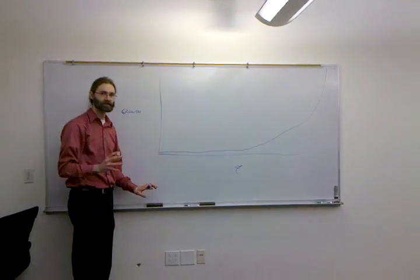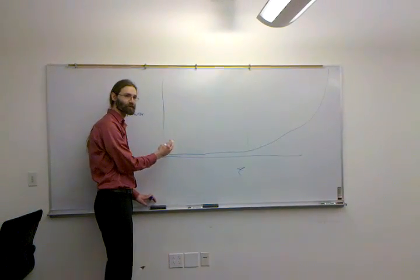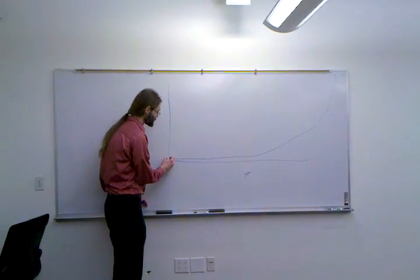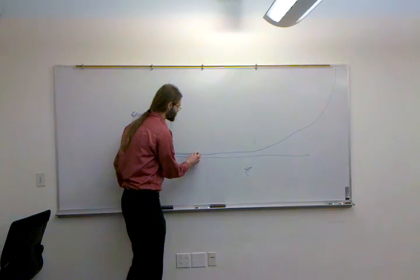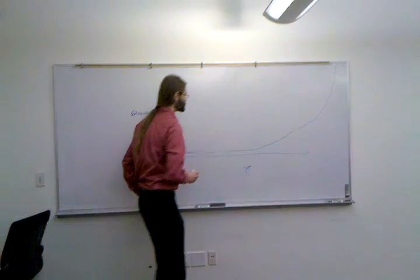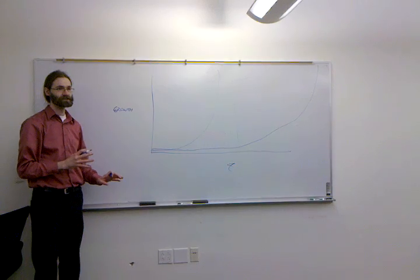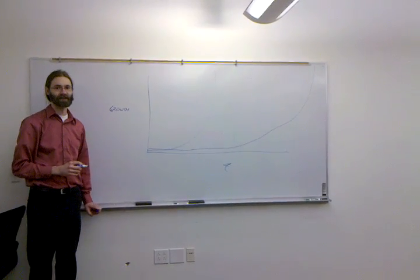But zombies, on the other hand, zombies, their growth curve is much more collapsed. So it's more like something like this. Really fast, right? Couple zombies and bam! Asymptotic.